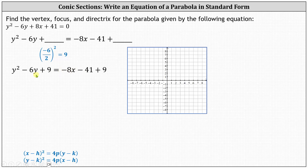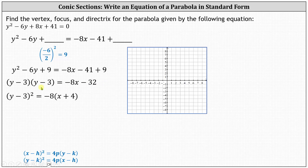Now we simplify and factor. The left side is now a perfect square trinomial. The factors of positive 9 that add to negative 6 are negative 3 and negative 3, so the left side factors to two binomial factors of y minus 3. Simplifying on the right, we have negative 8x minus 32. We write the left side as the square of y minus 3 and factor negative 8 from the right, giving us the square of y minus 3 equals negative 8 times the quantity x plus 4.